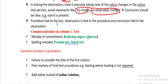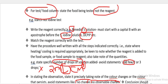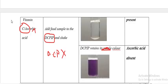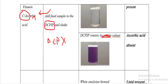The procedure is tied to the food being tested, the observation is tied to the procedure, and the conclusion is tied to the observation. For vitamin C, you must write the correct procedure — a wrong procedure gives wrong marks, because everything is tied to the food being tested.